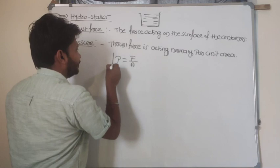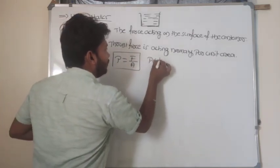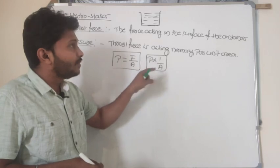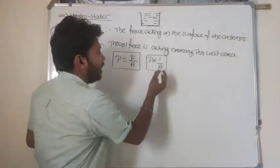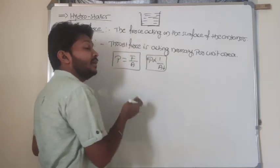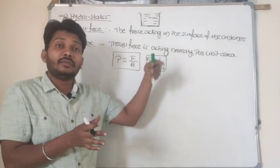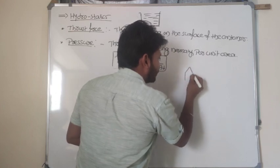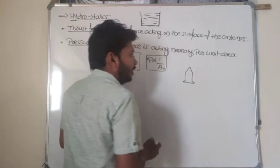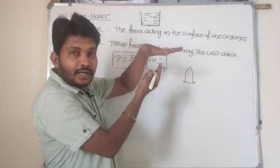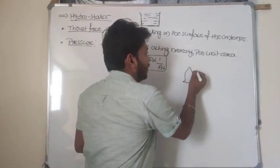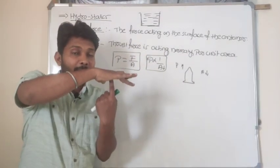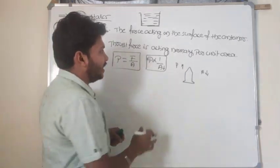In terms of equation, pressure is equal to force divided by area. Pressure and area are inversely proportional to each other. As the area decreases, pressure will increase. For example, consider a single nail — its area is less, so the pressure is more, and it will easily penetrate our palm.